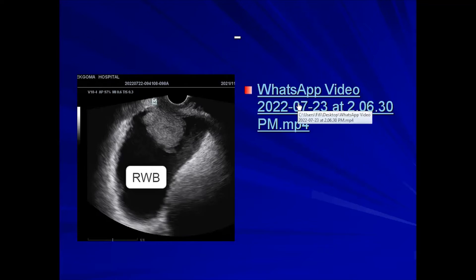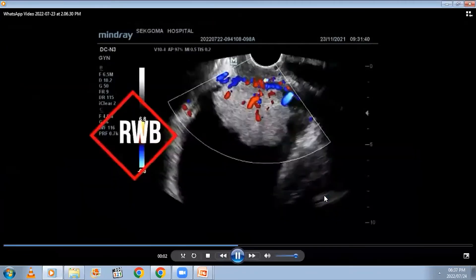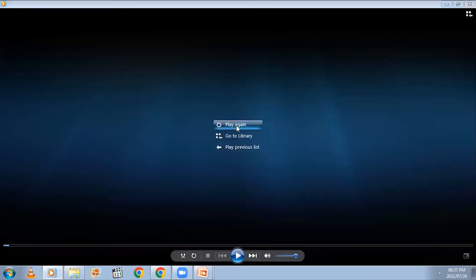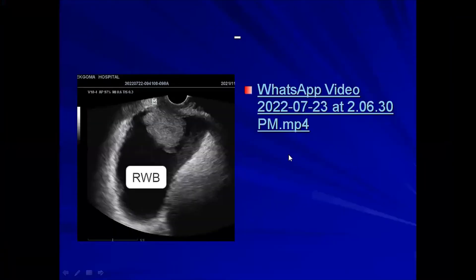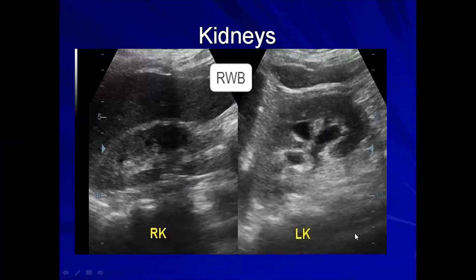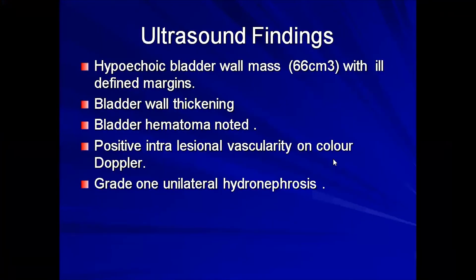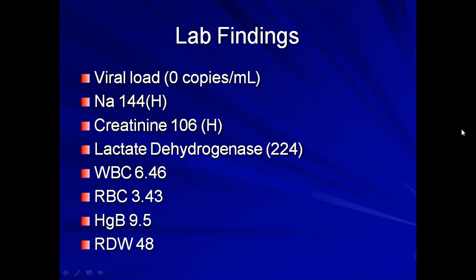From the video, we can see the mass again, showing intra-lesional vascularity, irregularity, and low-level echoes. Looking at the kidneys — both right and left — we can conclude there was ureteric involvement, as evidenced by grade one hydronephrosis indicated by the dilated calyceal system. In summary, the key ultrasound findings are: hyperechoic bladder mass of 66 cc with ill-defined margins, bladder wall thickening, bladder hematoma, positive intra-lesional vascularity on color Doppler, and grade one unilateral hydronephrosis.